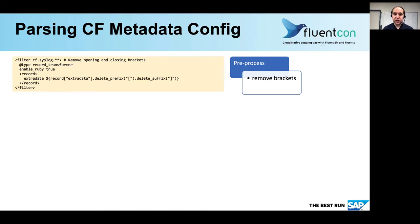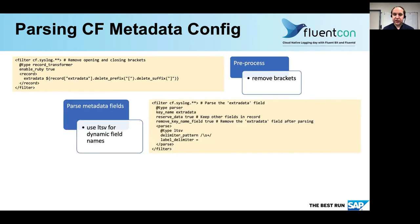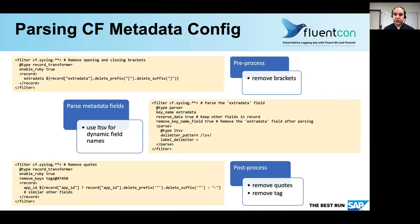In configuration, this looks as follows. Removing the brackets is a small Ruby code snippet. Then you see the configuration for the LTSV parsing rule — also very basic. And finally, in the post-processing step, when we remove the quotes, this is again done with a small Ruby expression. But here you need to know the name of the fields, so this is no longer dynamic. Still, you specify only the fields you want to have — just the ones that are interesting to you.